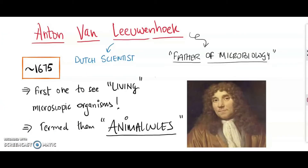Ten years later, another Dutch businessman and naturalist, Antonie van Leeuwenhoek, a contemporary of Hooke, crafted his very own light microscope — a monocular, single-lens microscope. Really proud of his invention, he went around and looked at everything, from pond water to the gunk in his teeth. He observed his dental scrapings. Leeuwenhoek was the first person in history to view living cells. He observed bacteria and protozoa, discovered blood cells, and was the first person to see living sperm cells of animals. He termed these microscopic organisms 'animalcules,' which literally means little animals.